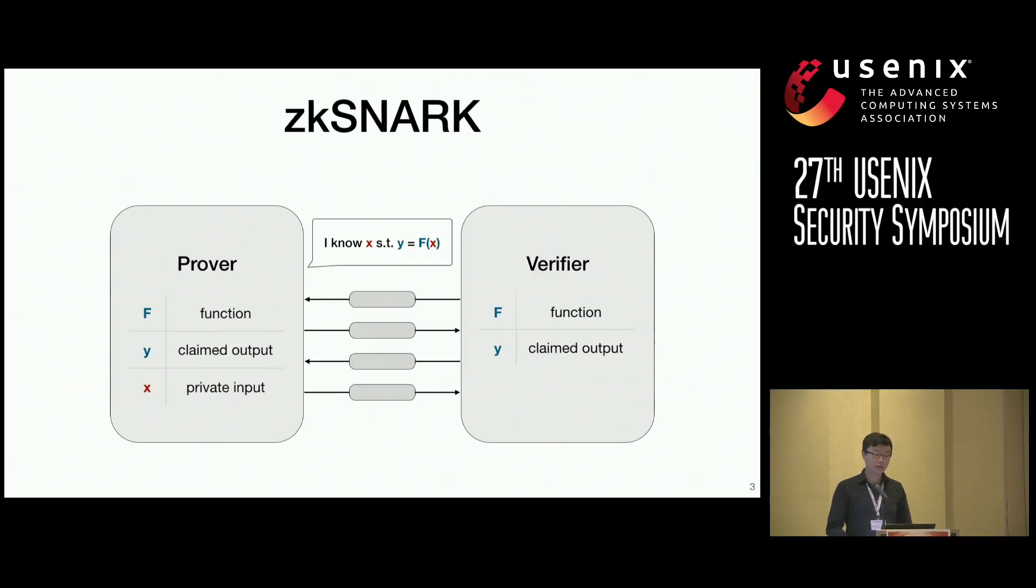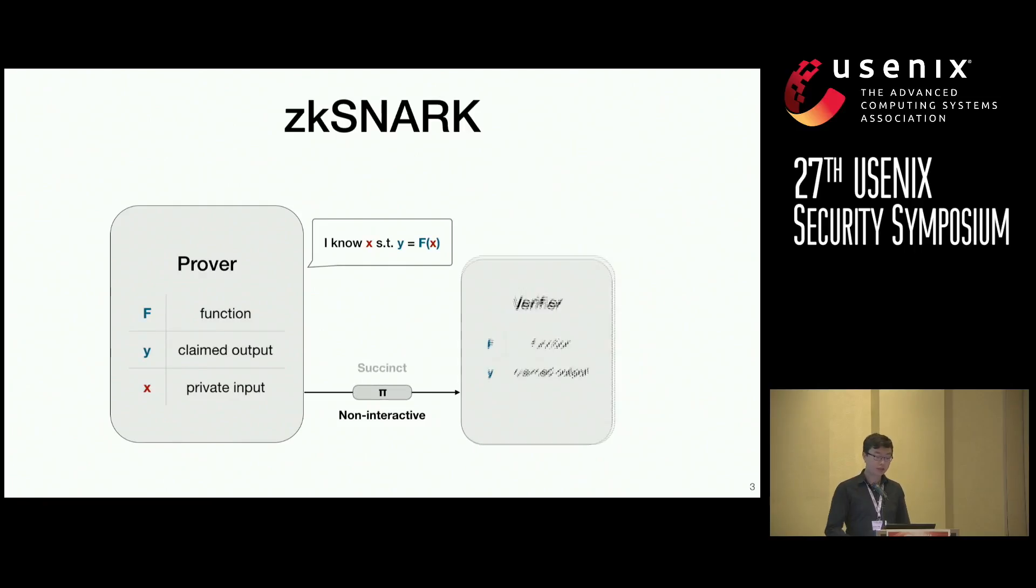Now, one particular type of zero-knowledge proof that has gained significant attention is that of ZK-SNARKs. And a ZK-SNARK is a zero-knowledge proof that has a few additional guarantees. First off, it is non-interactive, meaning the prover only needs to provide a proof to convince the verifier that they know the private input x. But in addition, it is also succinct, meaning that the proof is small in size and the verification time is fast.